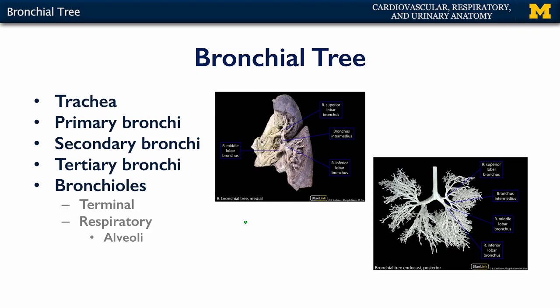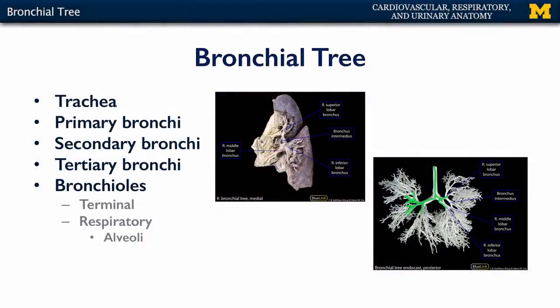The bronchial tree gets its name because if you were to turn it upside down it would look just like a tree. On the right here we can see an endocast — there's the trachea, the primary bronchi, the secondary bronchi, and then the secondary bronchi spawning many tertiary bronchi. There are approximately 9 to 10 bronchopulmonary segments on either side, so we should have 19 or maybe 20 tertiary bronchi. The endocast shows those tertiary bronchi going down into the bronchioles, though we can't capture the alveoli or likely even the respiratory bronchioles.